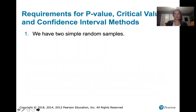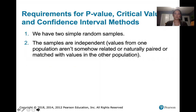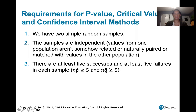So just a recap of the requirements. First we need to have two simple random samples, and next we need to make sure that those samples are independent from each other. In other words, values from one population aren't somehow related to or naturally paired with values from the other population. So we don't want twins, we don't want two partners within a romantic couple, we don't want before and after data — we want independent populations represented through those samples.